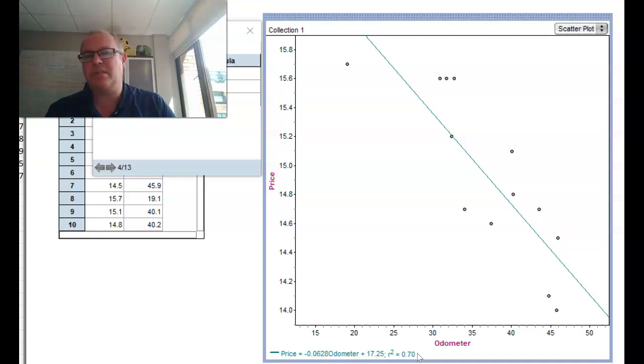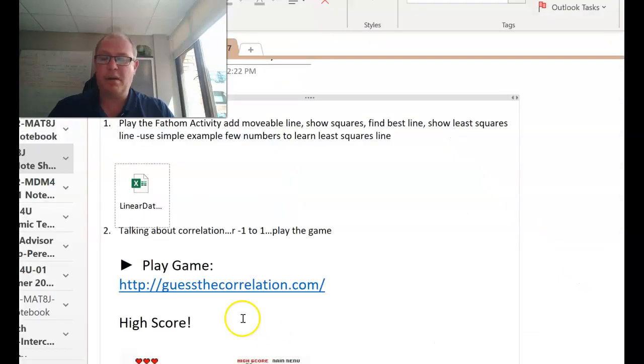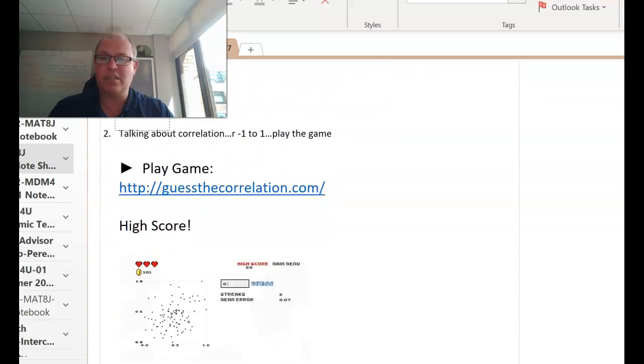There's a correlation game that you're going to play. Correlation is a number between minus 1 to 1 and it measures the strength of the linear relationship. What you're going to do next is follow the instructions in the lesson plan and you're going to have fun playing the guess the correlation game and trying to beat each other so you can get the highest score.